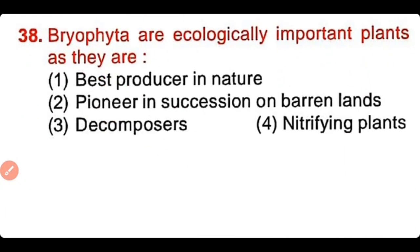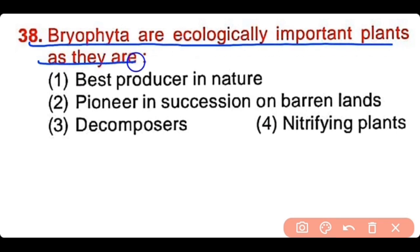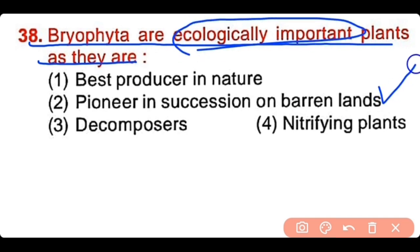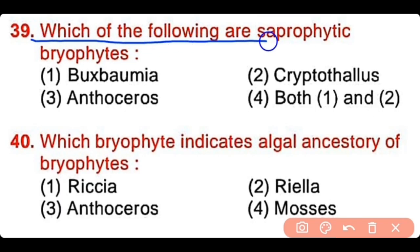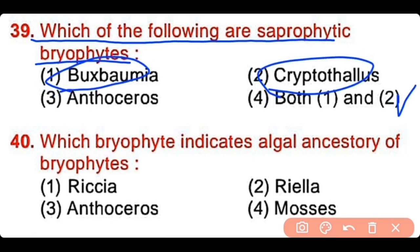Question number 38: Bryophyta are ecologically important plants as they are best producers in nature, pioneers in succession on barren land, decomposers, or nitrifying plants. The correct answer is option 2. Bryophytes are ecologically important because they are pioneers in succession on barren land. Question number 39: Which of the following are saprophytic bryophytes? Buxbaumia, Cryptothallus, Anthoceros, or both 1 and 2. The correct answer is option 4 — both Cryptothallus and Buxbaumia are saprophytic bryophytes.